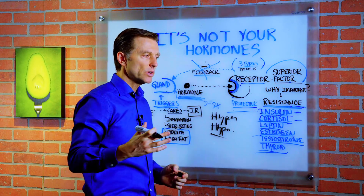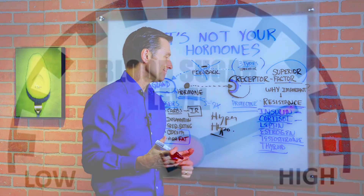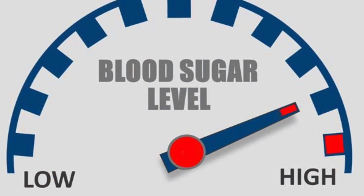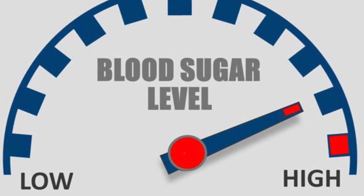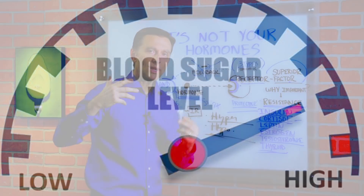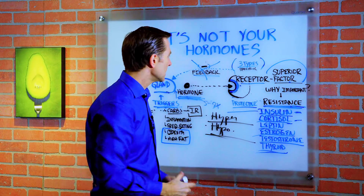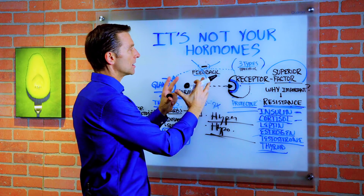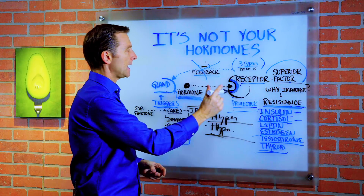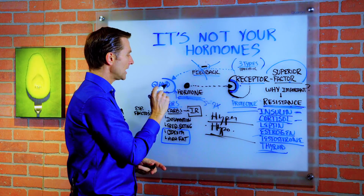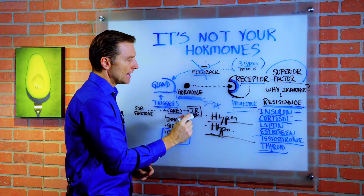Especially when we get into hyperglycemia — high blood sugar — or hypoglycemia. What I want you to do is understand the simplicity of this communication system and realize that there's something triggering the gland.